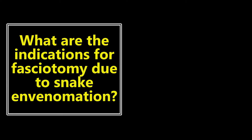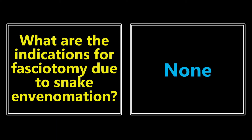What are the indications for fasciotomy due to snake envenomation? This is a little bit of a trap because there are no indications. If a patient has a snake envenomation and they develop compartment syndrome, this specific type of compartment syndrome is refractory to fasciotomy. So for the most part, if you see this on the exam — a patient developing compartment syndrome due to a snake envenomation — usually they do not go through a fasciotomy because the symptoms will not get better.